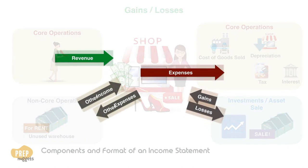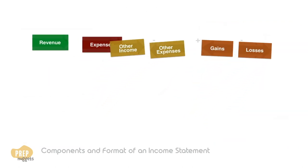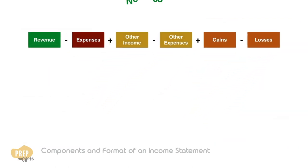Summarising, net income is equal to revenues minus expenses plus other income minus other expenses plus gains minus losses.